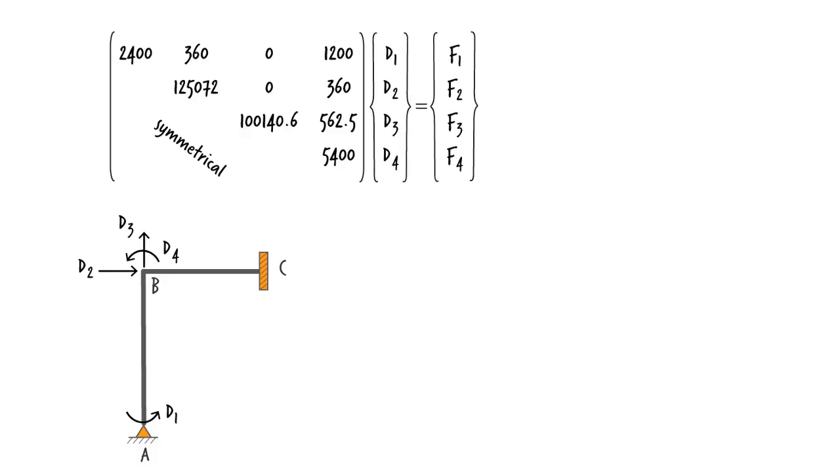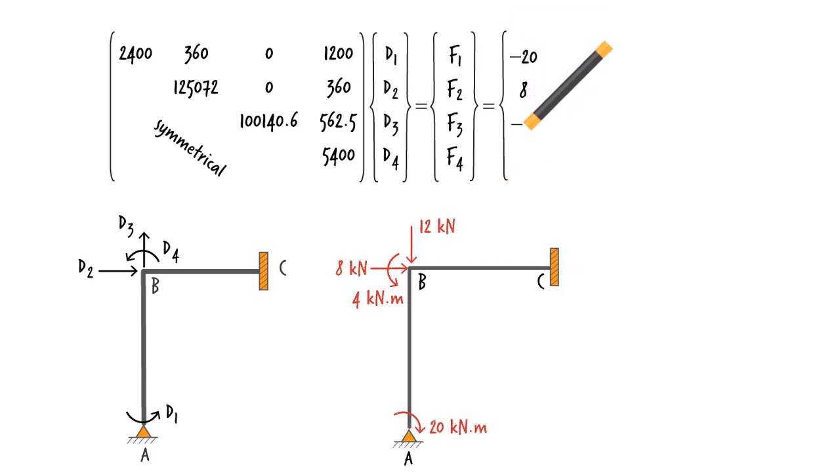Given that the frame has 4 degrees of freedom, the system of equations for the entire structure can be written as shown. The force vector here consists of the joint forces. It equals to the given values. The solution for this system of equations is computed.